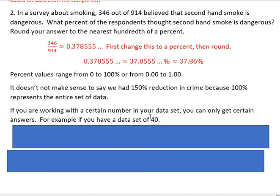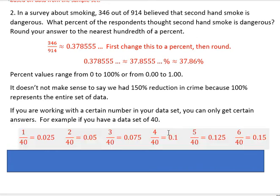Finally, if you're working with a certain number in your data set and we're talking about discrete data, you can only get certain answers. For example, if you have a data set of 40 — discrete means they're countable — say you're asking how many people out of 40 come to class with a calculator on test day. If one person came with a calculator, that would be 0.025 or 2.5%. If two people showed up, it'd be twice as many: 0.05. If three people showed up, that would be 0.075. And if four people out of 40 showed up, that's 10%. So the pattern is 2.5%, 5%, 7.5%, 10%.